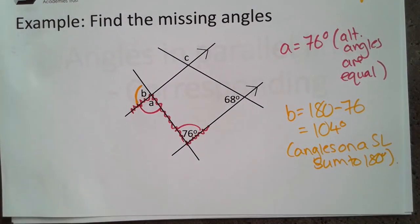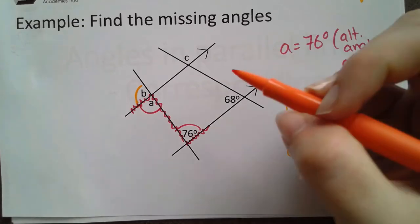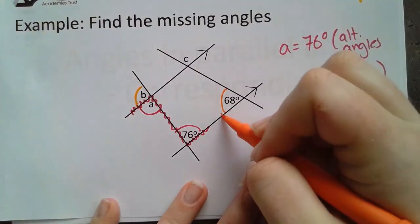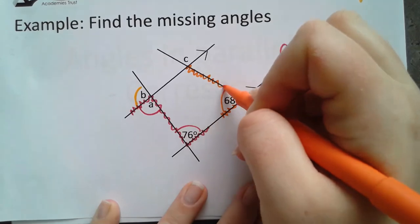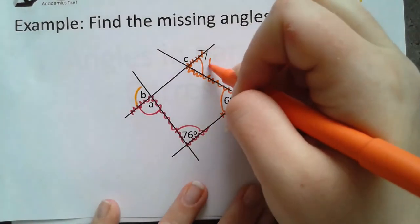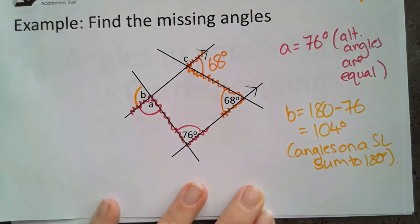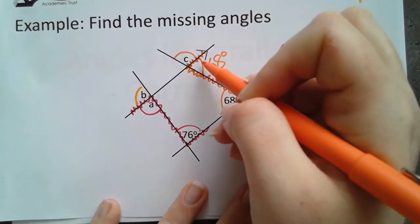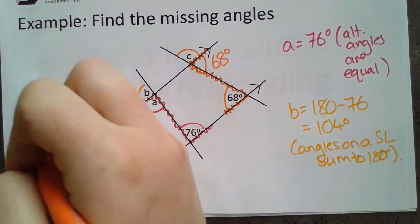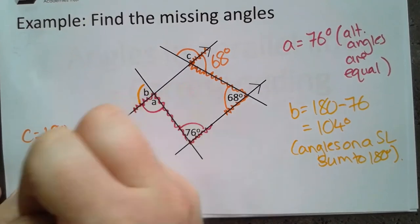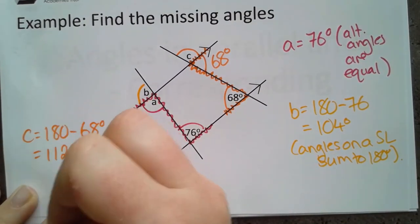So I'm going to draw a z with that angle here which is 68. That means that this angle here is also 68 degrees. And then from this point we've got some angles on a straight line. So for c I can do 180 take 68 degrees, which is gonna give me 112 degrees.